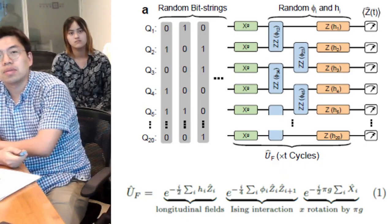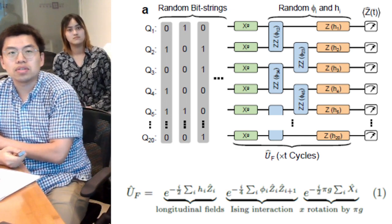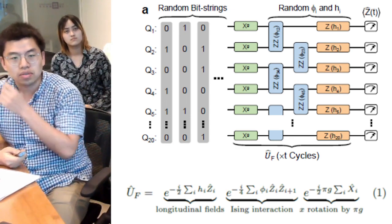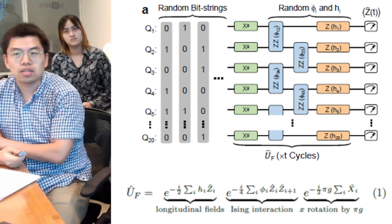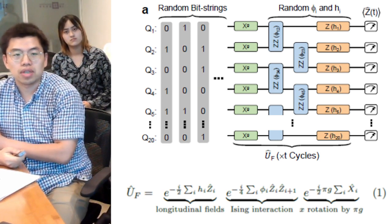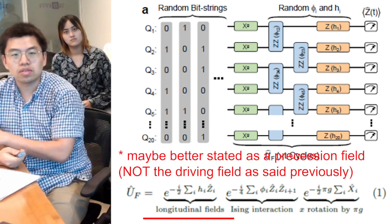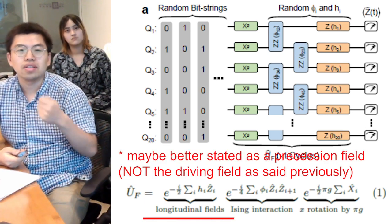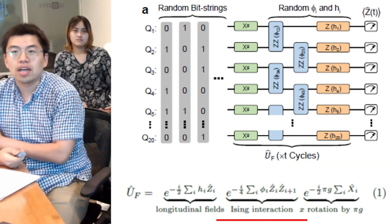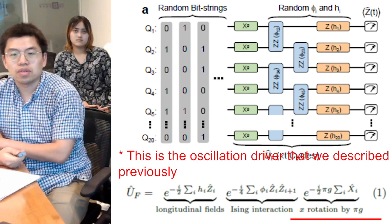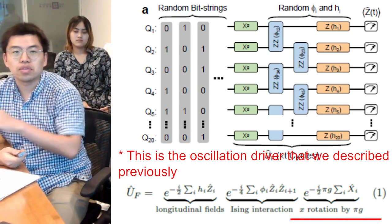A typical example of this kind of system is the Ising model. For example, this is on the left that you can find in the Google paper, with typical operations in place. One is the driving field which oscillates, the other one is the interaction, and also you have the rotation which will flip every qubit.